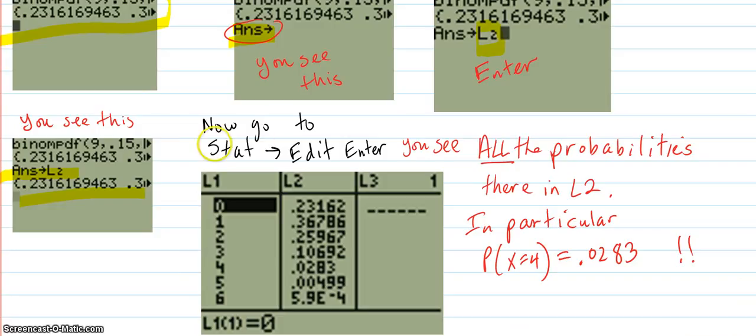So now you go back to stat, then edit, and enter, and you see all the probabilities there in L2. In particular, if x equals 4, there's your probability, 0.0283. But it also shows you the probability of zero successes is going to be 0.23162. Why is that so high? Because the probability of success is only 0.15. So that's three ways of doing it. And they're all valid ways to do that can be asked for on the test.